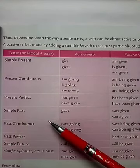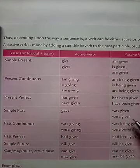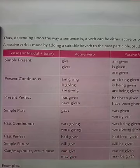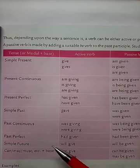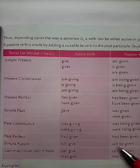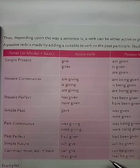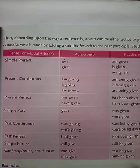For simple past, the passive form is 'was given' or 'were given.' For past continuous, it is 'was being given' or 'were being given.' For past perfect, it is 'had been given.' For simple future, it is 'will be given.' If there are modals like can, must, or may, the form will be 'can be given' or 'may be given.'